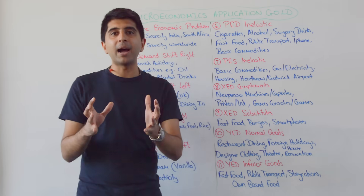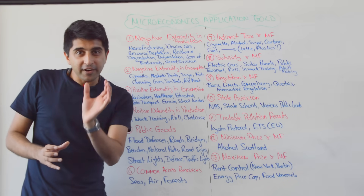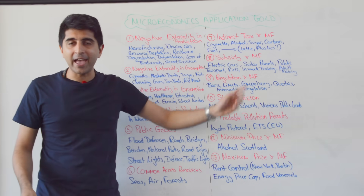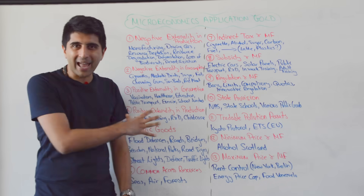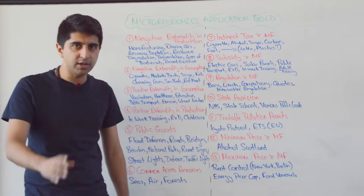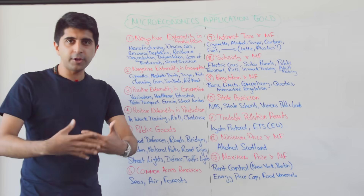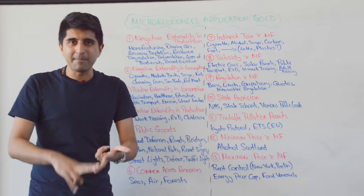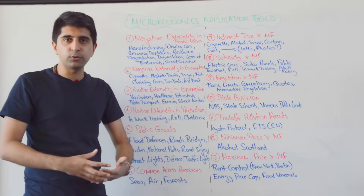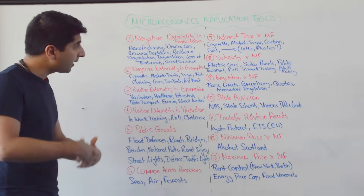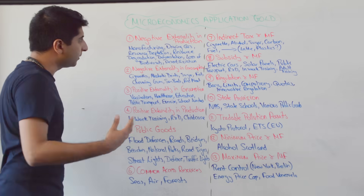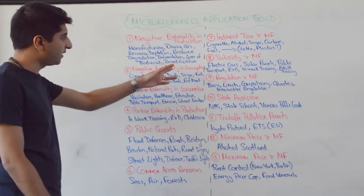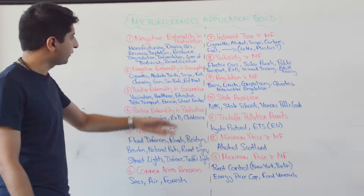Let's move on and look at market failure examples. Negative externalities in production — third-party costs from production activity. Manufacturing of chemicals, metals, and clothing generates air pollution and waste, which is often dumped into rivers or seas. Driving cars causes congestion, air pollution, and noise pollution. Resource depletion impacts current and future generations. Resource degradation includes deforestation, loss of biodiversity, and desertification — many examples of third-party costs as a result of production.